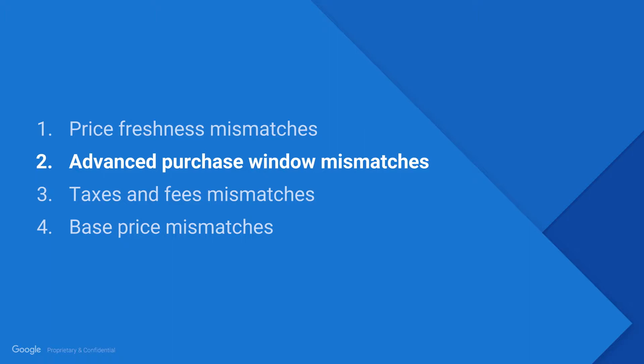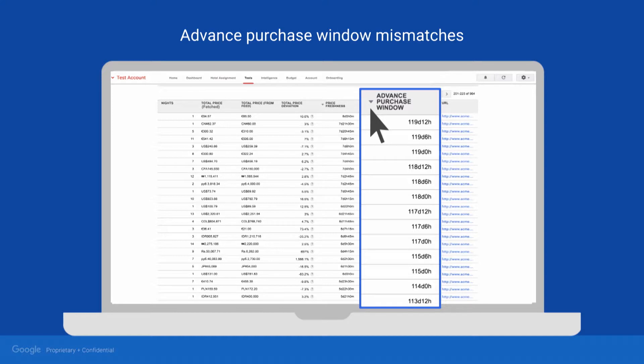Next, we'll look at using the advanced purchase window to spot patterns. To begin, sort by advanced purchase window. Look for future booking windows with ten or more rows of itineraries clustered around them. As you can see in this example, when you have a lot of price mismatches around a certain window, it can indicate that there is an issue with your process for submitting prices around that booking window.